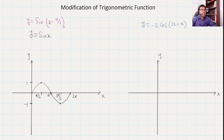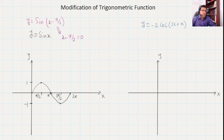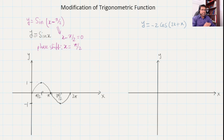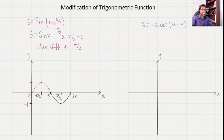Now I would like to see how the phase change of minus π/2 can affect the graph. To find the phase shift from the equation, we set x minus π/2 equal to 0, which gives us x equal to π/2. That is our phase shift. So when we have negative π/2 inside the function, the graph basically starts from the right of the original starting point. Our original starting point was 0, but now the graph will start from π/2 — that is the phase shift, starting from the right side.